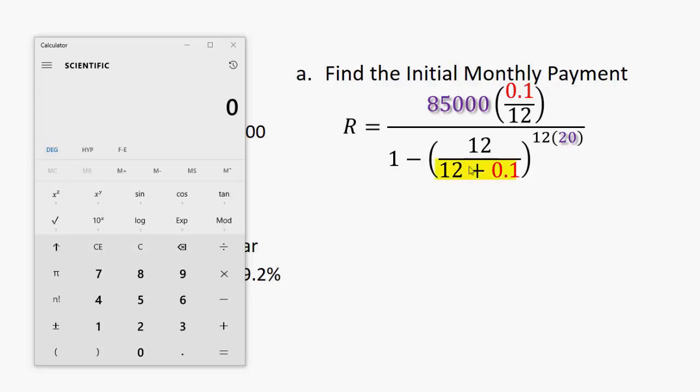These parentheses tell us that we have to perform this division before we can raise to a power. Within the power, this multiplication has to occur before we can also exponentiate, raise to a power. And then we have to subtract the result of all of that from 1.